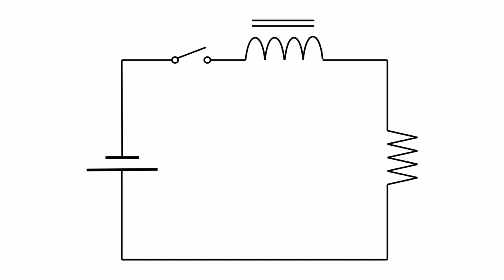Just as a quick refresher: when we have this circuit, the moment I close this switch, current starts at zero and then it starts to climb until it reaches a steady state. It takes five time constants to get there — one, two, three, four, five — until it reaches steady state.